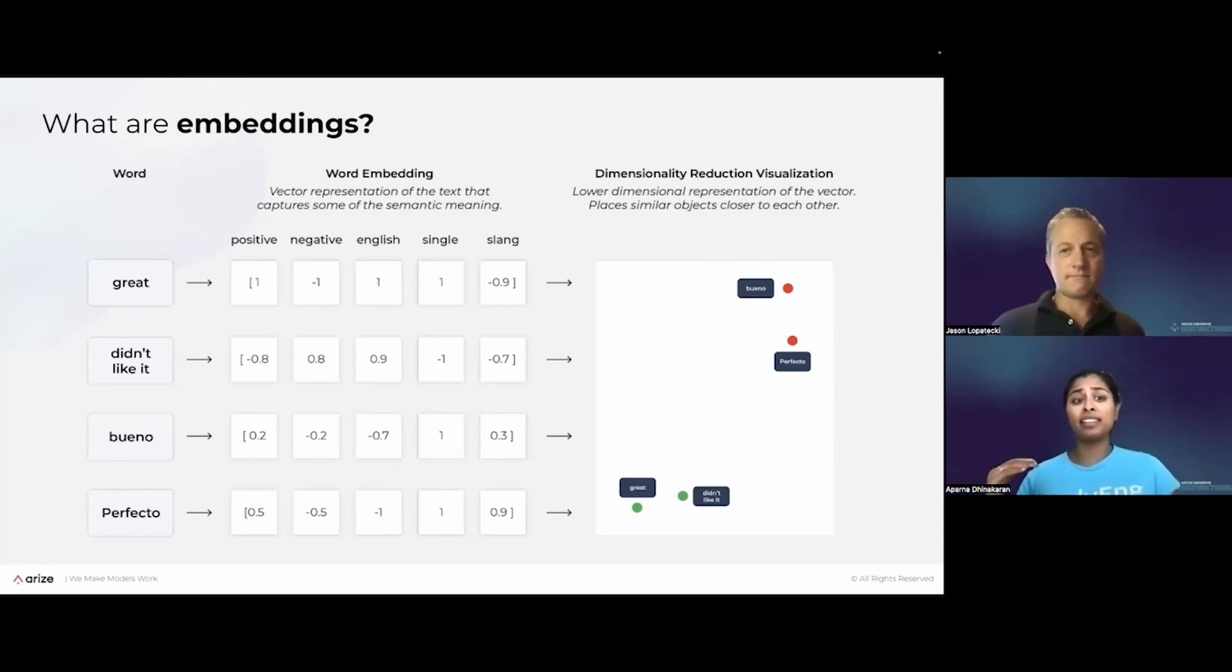So first off, what are embeddings? Well, embeddings, you can think about it really as this mathematical vector representation of the data that captures some of the semantic meaning. This data could be words, like in this example here. In this case, we'd call it a word embedding. But embeddings can also represent images, audio signals, large chunks of unstructured data. And what it does is it compresses the data and it preserves the relationships within your data.